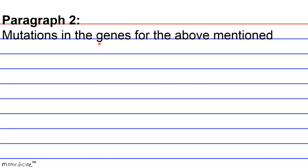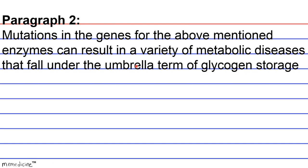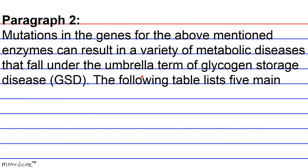Paragraph 2. Mutations in the genes for the above-mentioned enzymes can result in a variety of metabolic diseases that fall under the umbrella term of glycogen storage disease, GSD for short. The following table lists five main types of GSD.